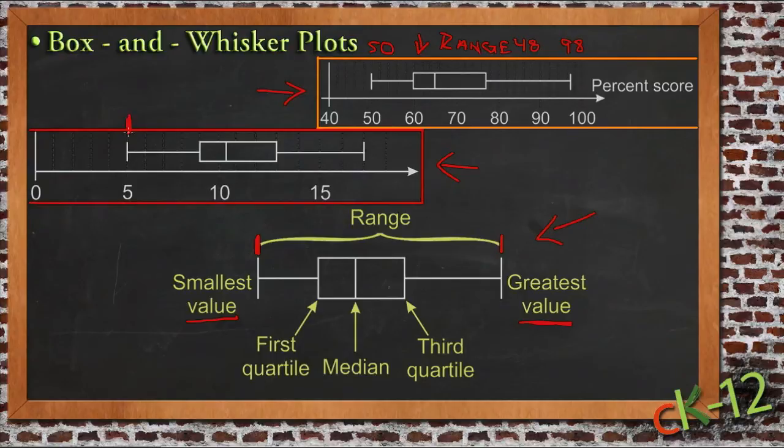With our second graph here, our smallest value is at 5, and our greatest value is at what looks like about 17. So for that one, the range is between 5 and 17, so it's a distance of 12 between them.